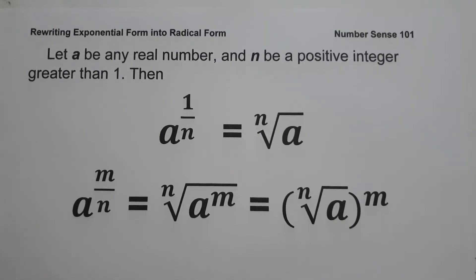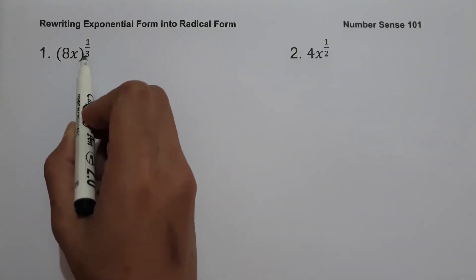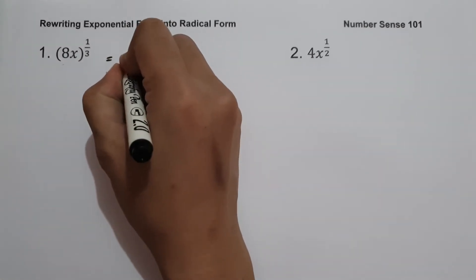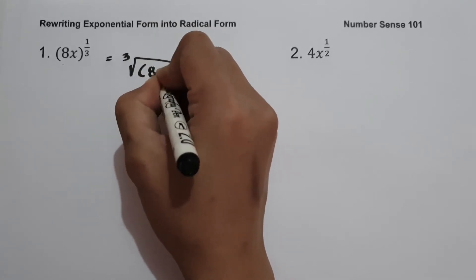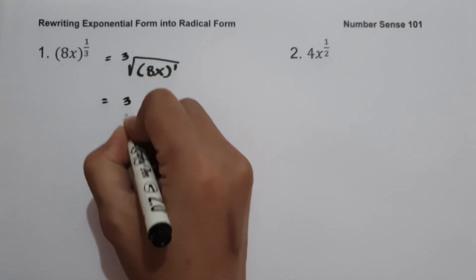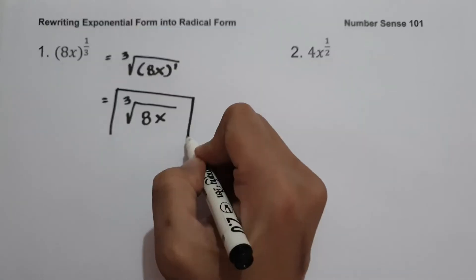Let's start with example number one: quantity 8x raised to one third. To write this in radical form, we have 8x as our radicand, 3 as our index, and 1 as the power of the radicand. So we write this as the cube root of quantity 8x raised to 1, or simply the cube root of 8x. And this will be our answer.